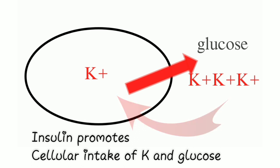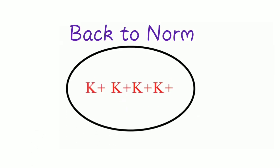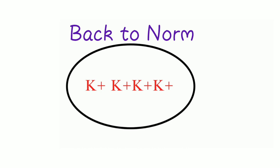Insulin promotes intake of glucose and potassium ions back into the cell, thereby maintaining the homeostasis of potassium ions.